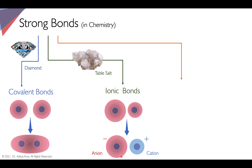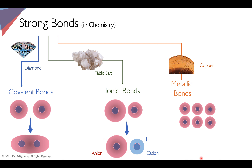The third type of strong bond found in matter is the metallic bond, found in strong metals like copper. The unique feature of metallic bonds is that electron clouds of many atoms are shared — unlike a covalent bond between just two atoms, here one electron can be shared across many atoms in a very dense network. This kind of situation is called a metallic bond, and it explains important physical properties of metals like malleability, ductility, luster, and strength.